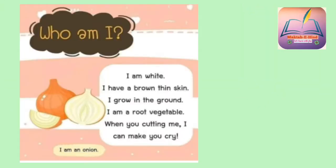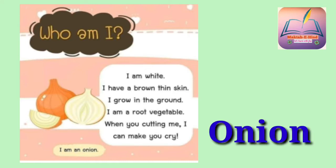I am white. I have a brown thin skin. I grow in the ground. I am a root vegetable. When you are cutting me, I can make you cry. Who am I? I am an onion.